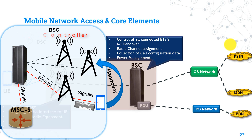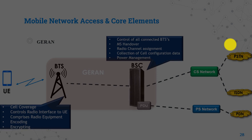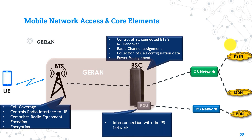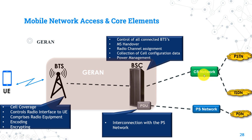Attached to the BSC there is a unit called PCU, Packet Data Unit. The main purpose of this unit is to allow interconnection with the packet switching core by performing rate adaptation processes. There are two interconnecting networks with the GERAN: the CS network for voice calls, and the PS network for data sessions.